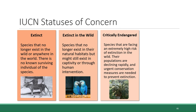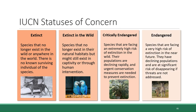The next category is endangered. This includes species facing a very high risk of extinction in the near future — they have declining populations and are at significant risk of disappearing if threats are not addressed. An example is the Iberian lynx, which is endemic to Portugal and Spain. The Iberian lynx lost about 80% of its habitat range between 1960 and 2000, and as of July 2023, there are an estimated 156 individuals left in the wild.